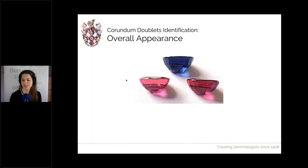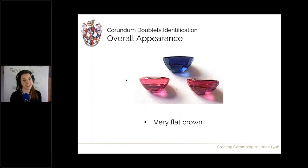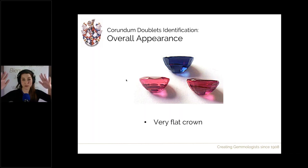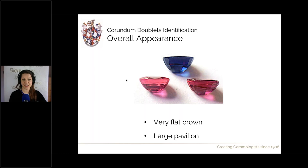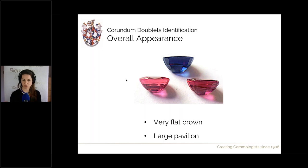Corundum doublets can be made as rubies, blue sapphires, or even colour-change corundum doublets — any colour achievable by Verneuil flame fusion. Typically, these have a very flat, almost flush crown, because they use a small and still somewhat valuable natural material on top, and too much of it would show green. In contrast, the bulk of the stone — the synthetic pavilion — is very deep, giving a very chunky boat-like appearance from the side. That visual disproportion is often your first clue to look more closely.